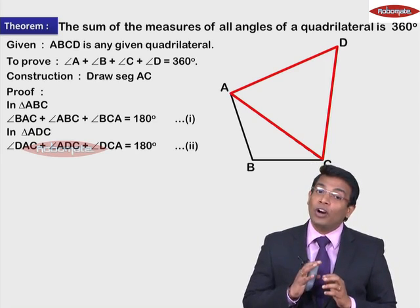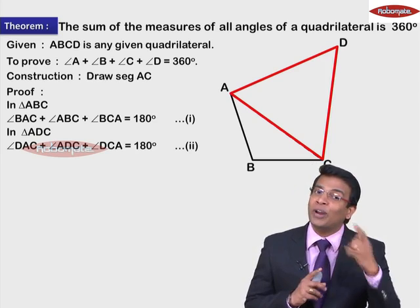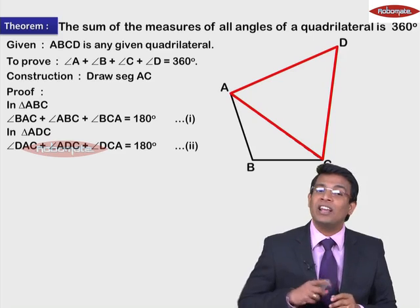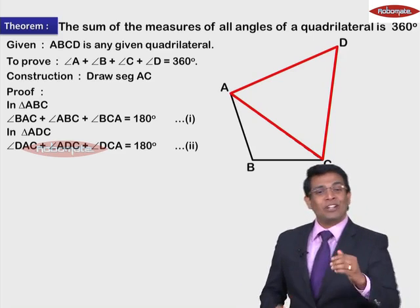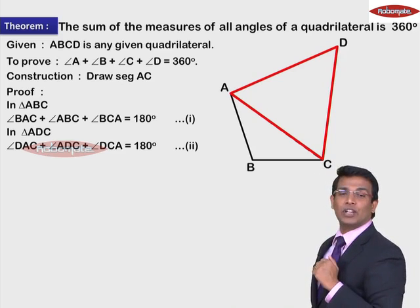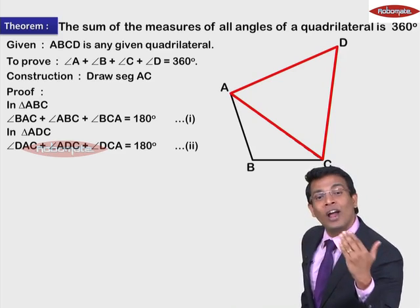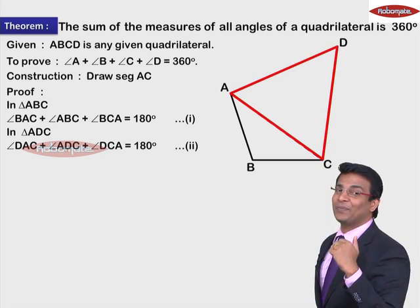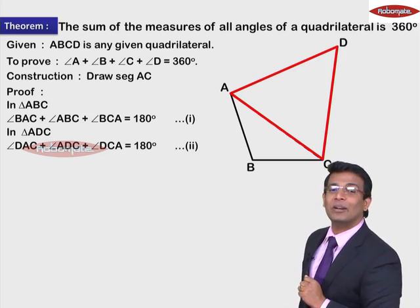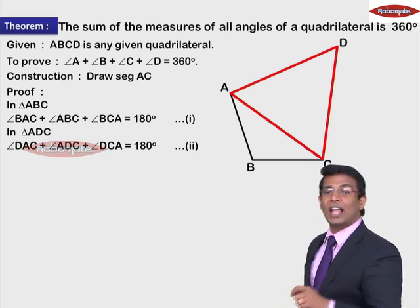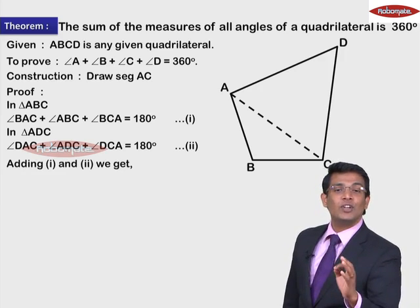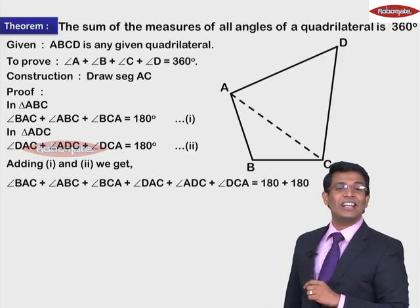Now we want 180 plus 180 to get 360 degrees. That means the right-hand side of statement one and statement two have to be added. So adding statement number one and two — adding the left-hand side and the right-hand side — we get: angle BAC plus angle ABC plus angle BCA plus angle DAC plus angle ADC plus angle DCA is equal to 180 plus 180, which is 360 degrees.